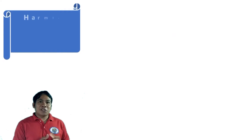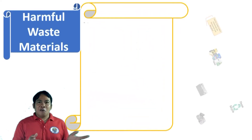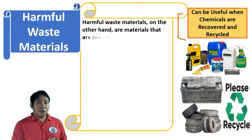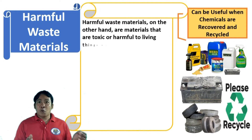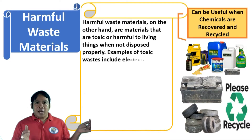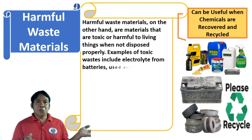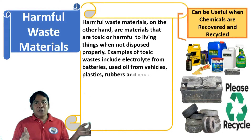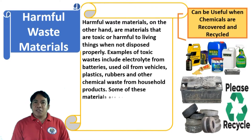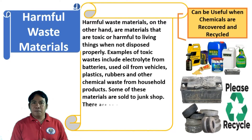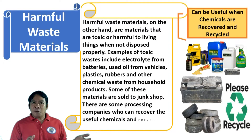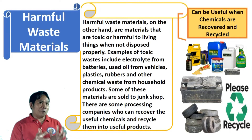Harmful waste materials, on the other hand, are materials that are toxic or harmful to living things when not disposed of properly. Examples of toxic materials include electrolyte from batteries, used oil from vehicles, plastics, and burning of rubber — these can also be hazardous. Some of these materials are sold to junk shops. There are processing companies that can recover the useful chemicals and recycle them into useful products.